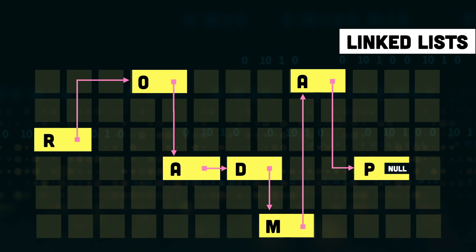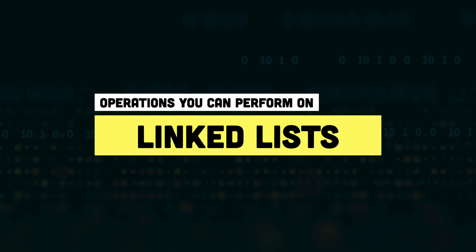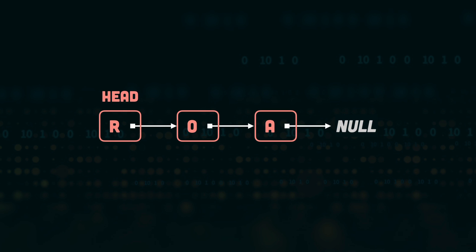Now that we know what linked lists are, let's look at the operations you can perform on them and their complexity. Here we have a linked list with three character values, R, O, and A, and the head of the linked list is pointing to the element R.